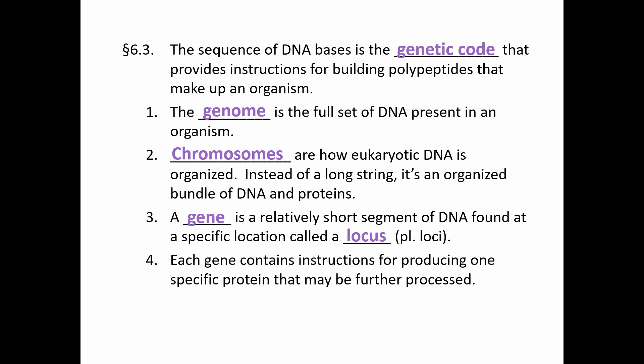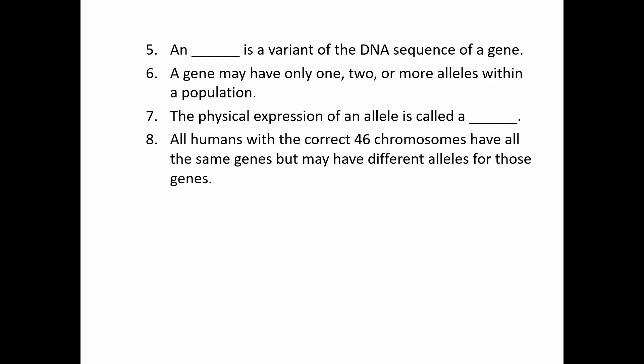From one person to the next, if we're looking for a particular gene, we're going to find it in the same spot in person A that we find it in person B. That makes it easy for us to learn about what different genes are and what they do, since we have a very specific pattern and location. Each gene contains specialized instructions to produce one specific protein. An allele is just a version of that DNA sequence of a gene, and genes can have one, two, seven, ten, or a hundred different alleles within a population.